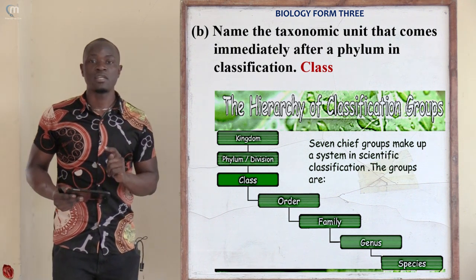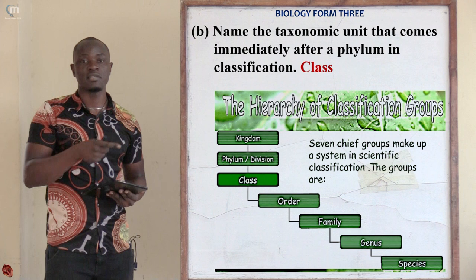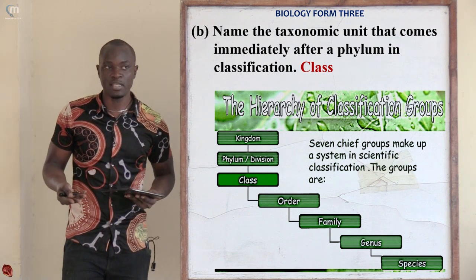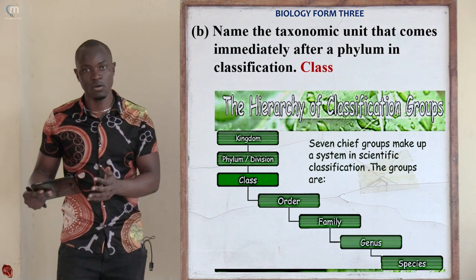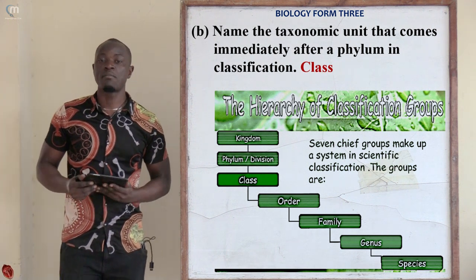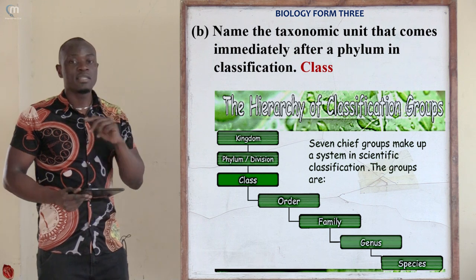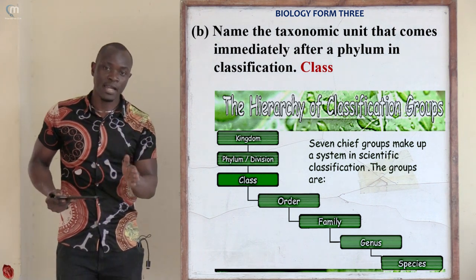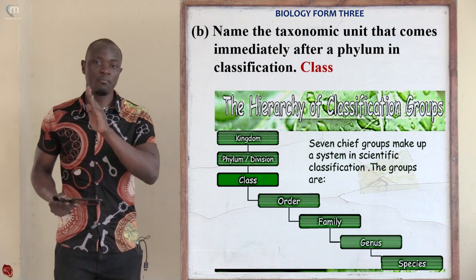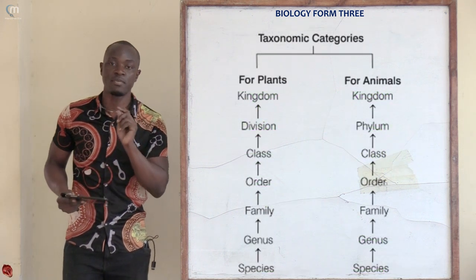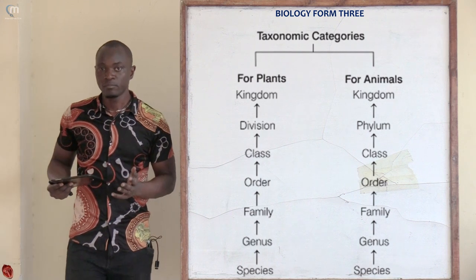Never interchange the order of the hierarchy. They must follow in order, whether ascending or descending. When writing the hierarchy, always include both phylum and division — never omit either. Phylum represents animals while division represents plants. There are two types of phylum: phylum Chordata for organisms with a backbone (vertebrates), and phylum Arthropoda for organisms without a backbone (invertebrates).